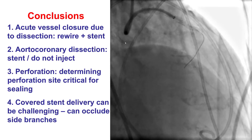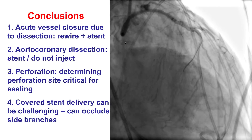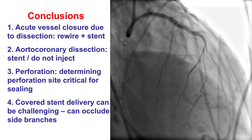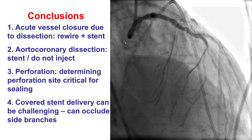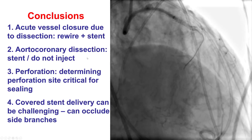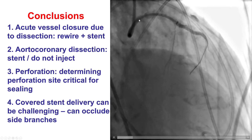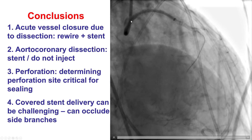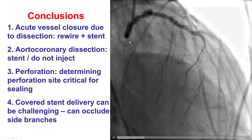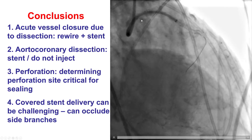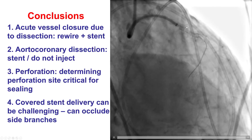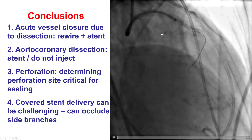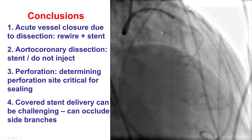The aortocoronary dissection occurred due to baseline left main disease and difficulties advancing wires and balloons. Treatment is to place a stent covering the dissection and then stop injecting, as further injections can propagate the dissection. IVUS can guide stent implantation, and an export catheter or other aspiration catheter can be used to facilitate visualization of the vessel afterwards.